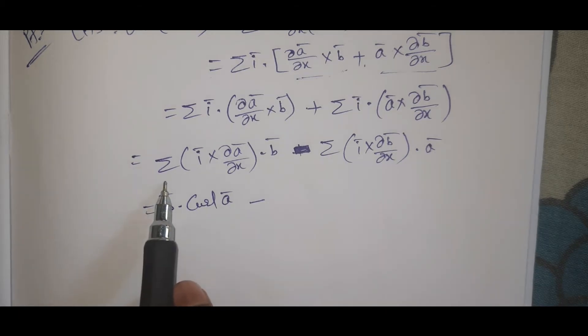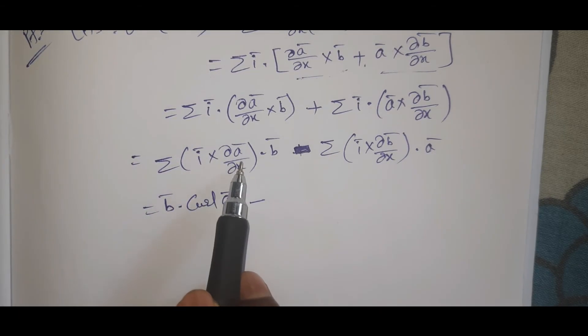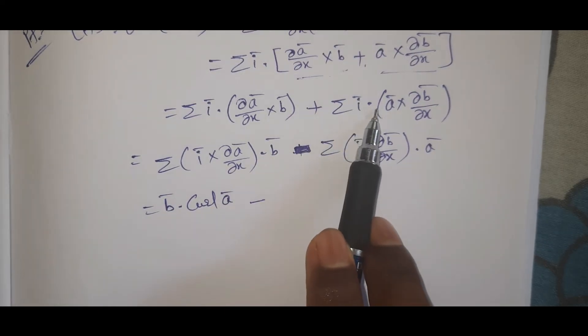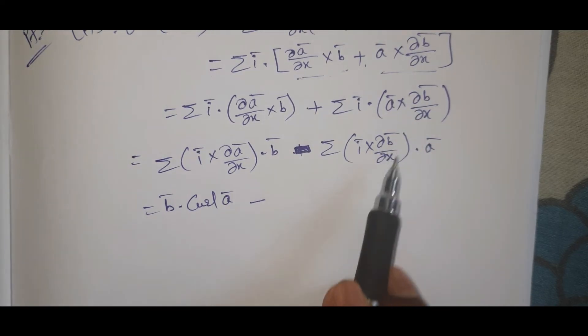Now see, that equal to i bar dot i bar dot i bar cross dou bar by dou x. i bar dot a bar dou b bar by dou x, dou b bar by dou x, plus...